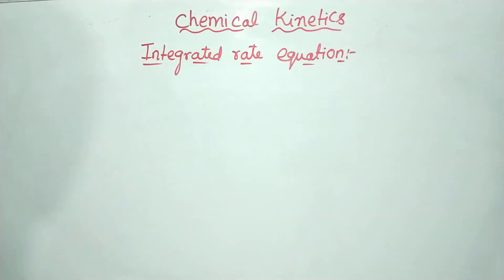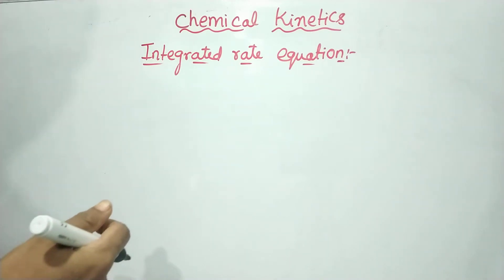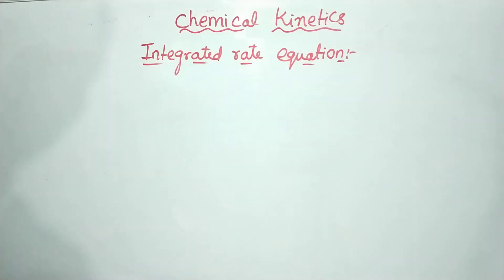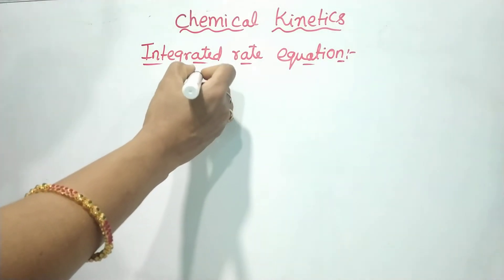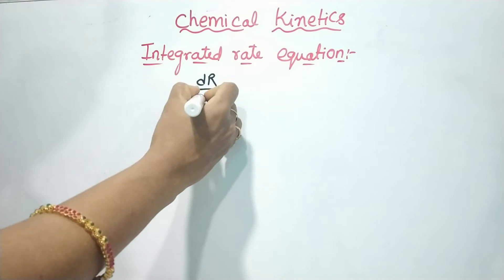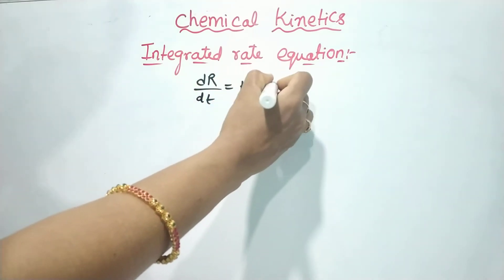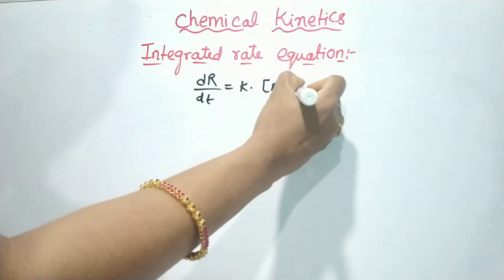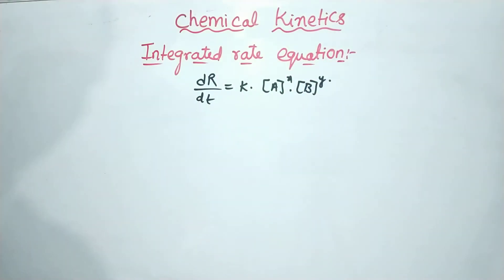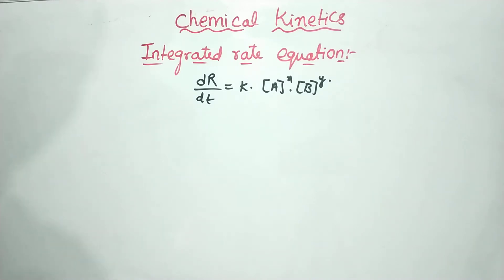Hi, hello everyone, welcome to Chemistry Diksha. Today's class we will discuss the integrated rate equation for zero order reaction and the half life time of zero order reaction. We use integrated rate equations because the differential rate law — dR/dt = k[A][B] — gives us the instantaneous rate, which is not always convenient to use.